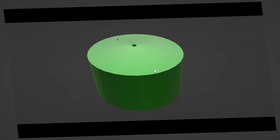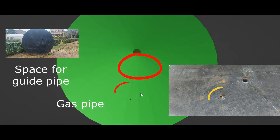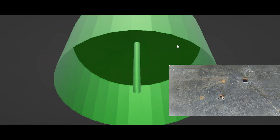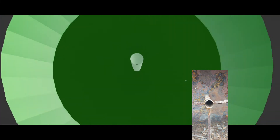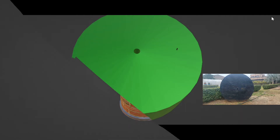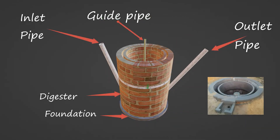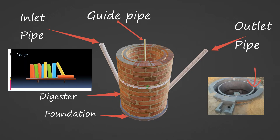Let us explore the gas holder drum by separating it from the biogas plant. You can see the space for the guide pipe and gas outlet pipe. Turning the drum upside down, you can also notice the space for the guide pipe inside the drum. Compare the model with the actual photograph of the drum. There are two walls at the top — the outer wall is part of the cylindrical digester, and there is also an inner wall built on the ledge so the drum can rest when there is no gas. The ledge acts like a shelf.